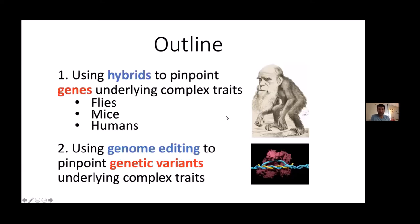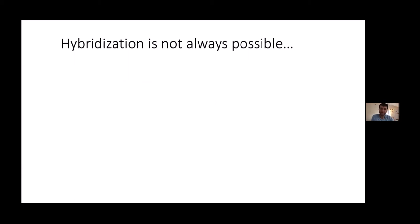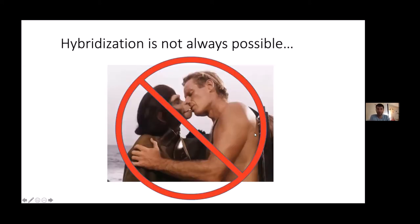Now I'll turn to the third organism — humans. Of course, hybridization is not always possible between any two species. Humans cannot hybridize with any other species, including chimps, our closest living relatives. While this is probably a good thing for human society, it's not good for my research program, because it would be nice to apply these hybrid methods to study human evolution.